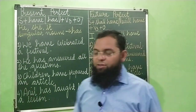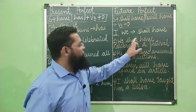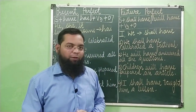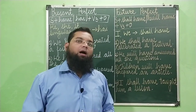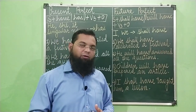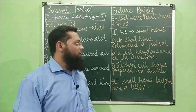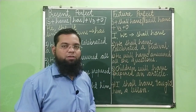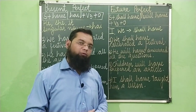So these are few examples of future perfect tense. 'We shall have celebrated a festival.' Ab hum future ke baare mein baat kar rahe hain. Iska translation: hum ek tyohaar mana chuke honge — future mein kaam pura ho jayega. Second example: 'He will have answered all the questions.' Woh poore questions ke answers de chuke honge — future mein.